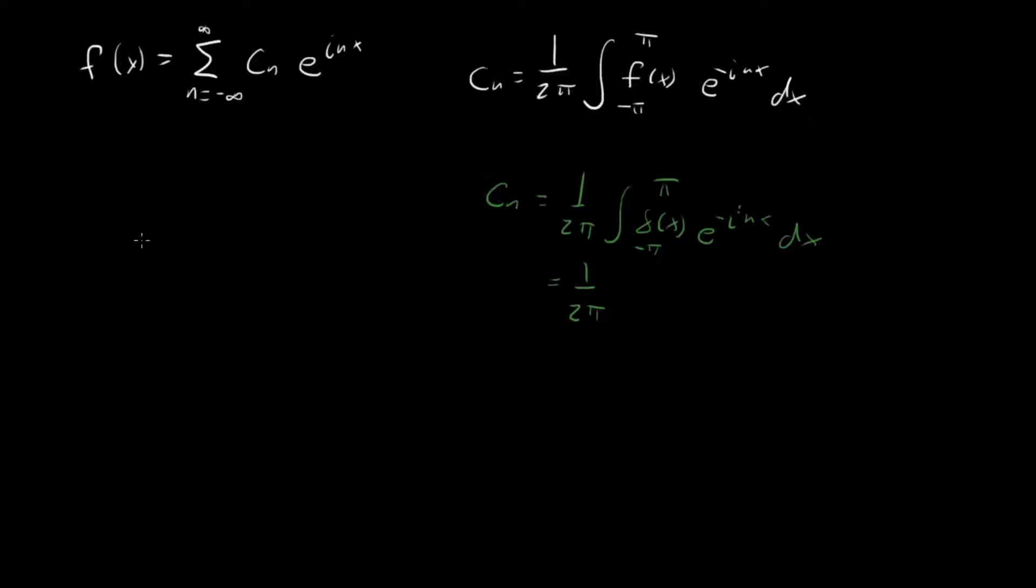Okay, easy enough. So we've got it. Our delta function on the interval minus pi to pi is going to be equal to this sum from n equal to minus infinity to infinity e to the i n x over 2 pi.